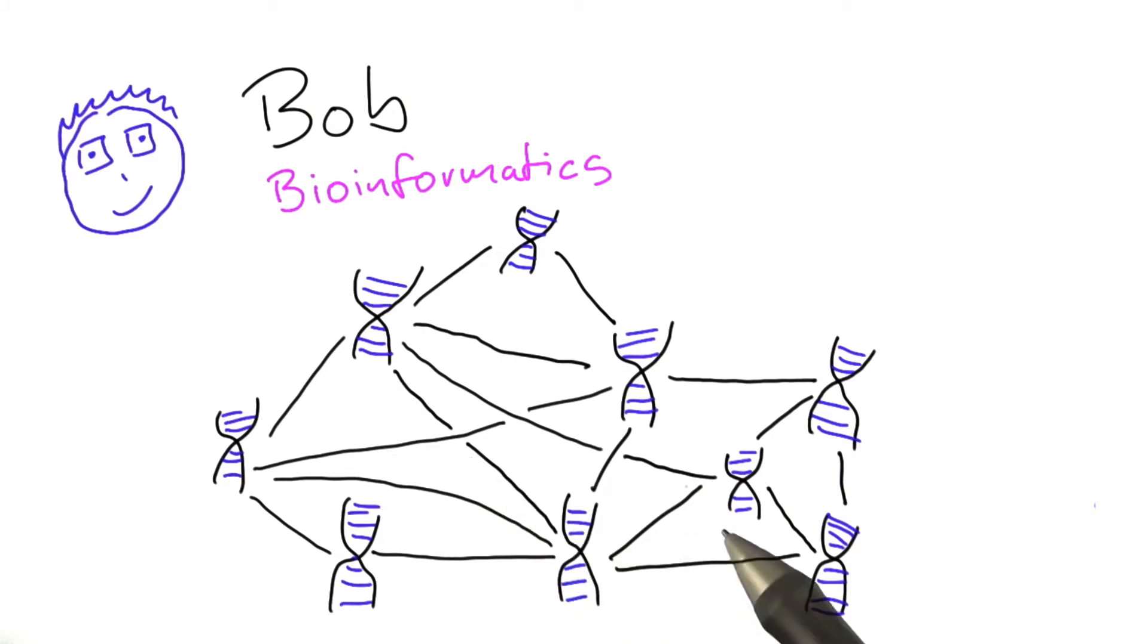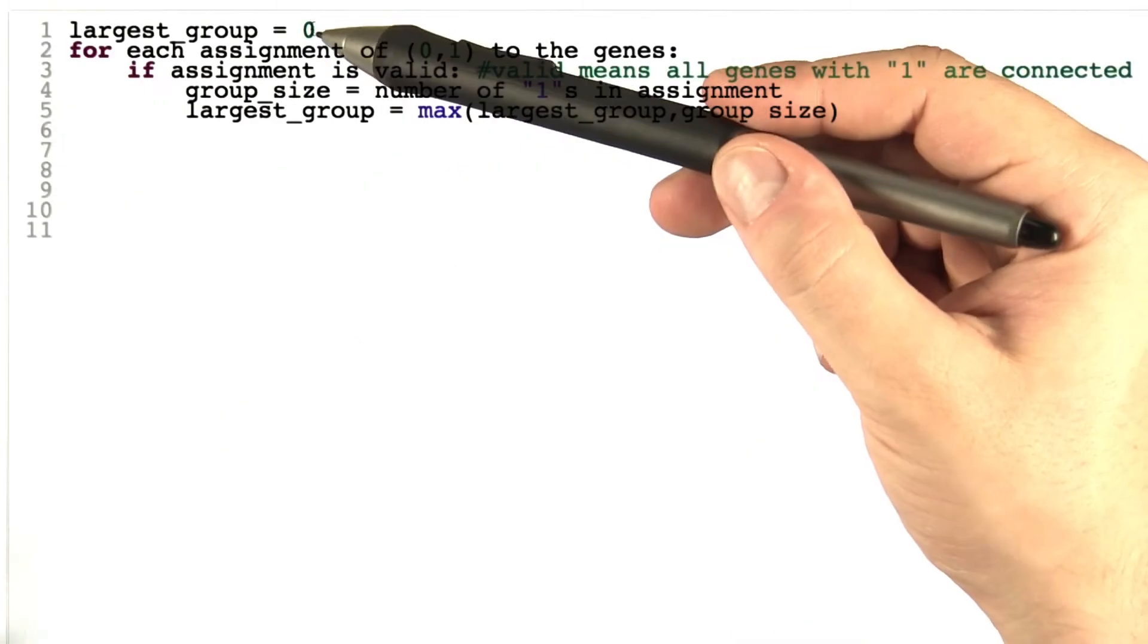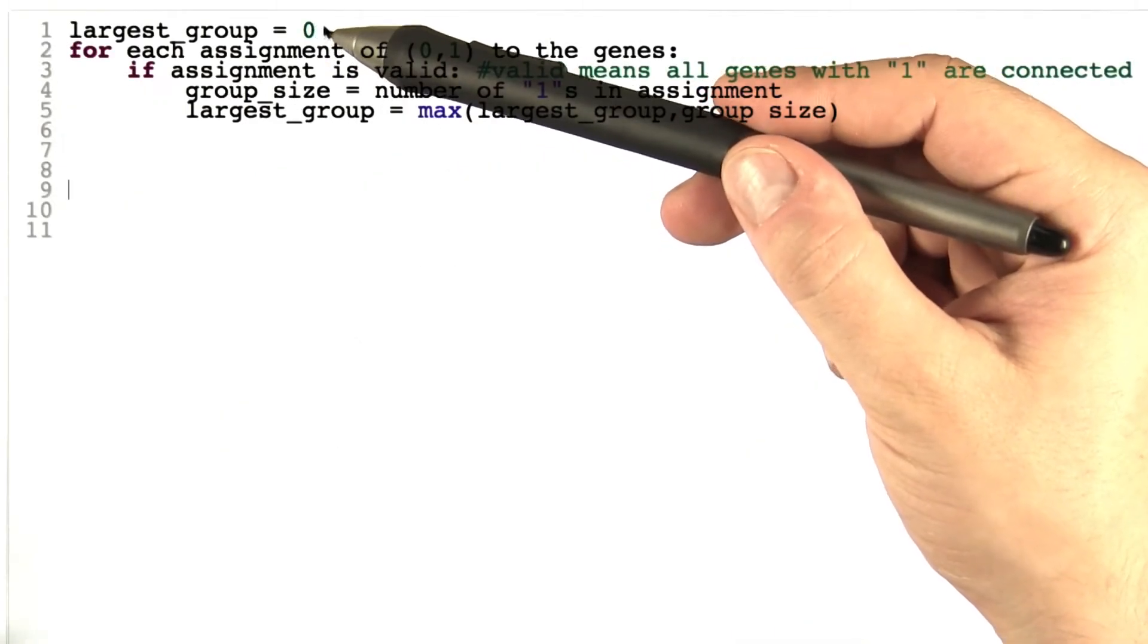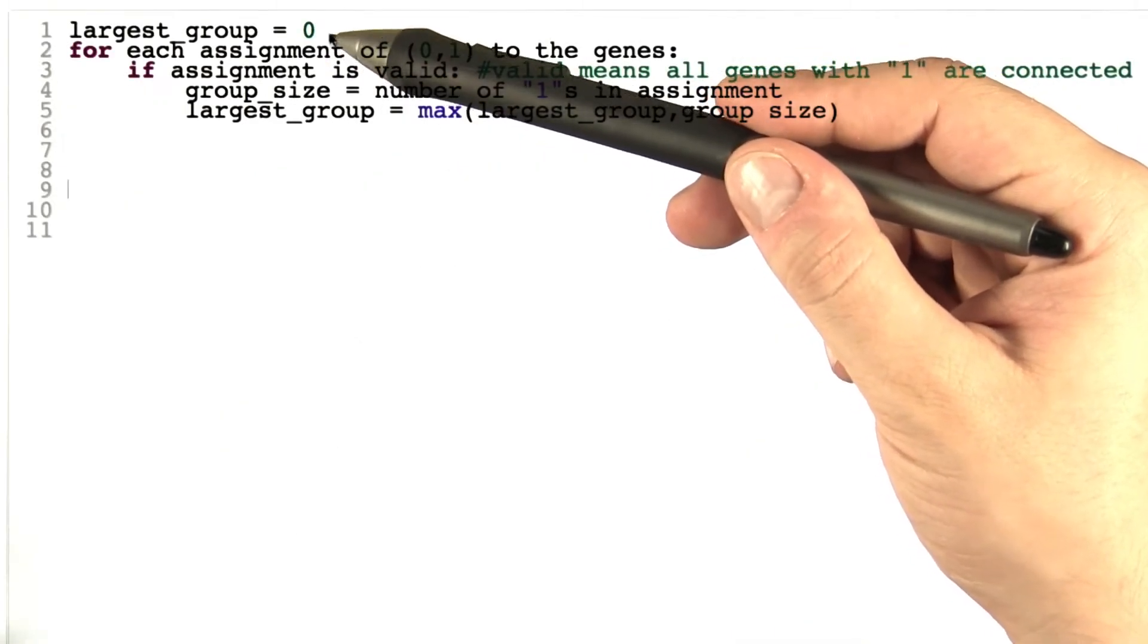How can Bob approach this problem? Well, actually, he could write an algorithm that is very similar to the one that Alice has used. We start out by setting the size of the largest group to 0 because we haven't found any group yet.